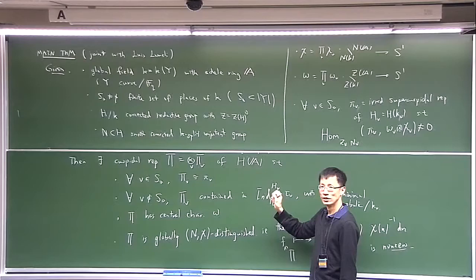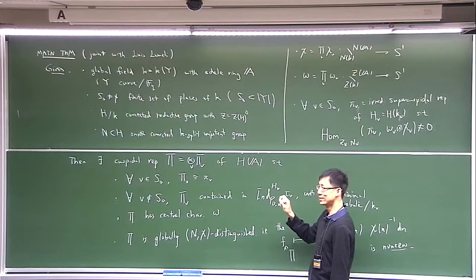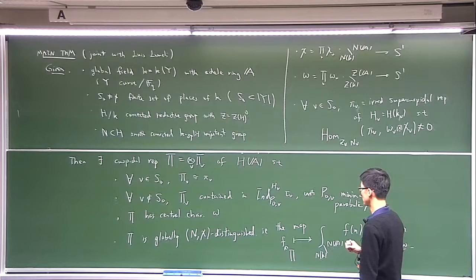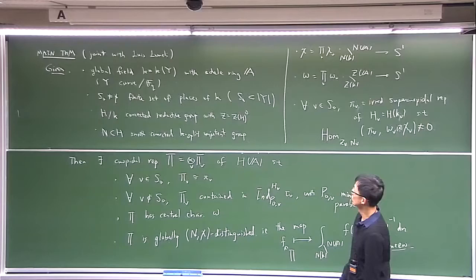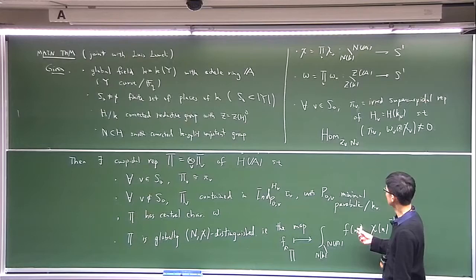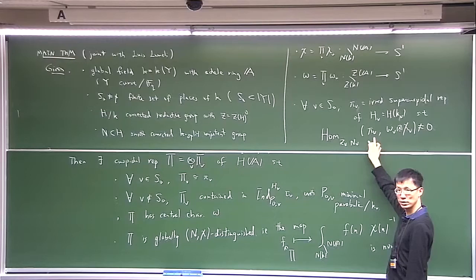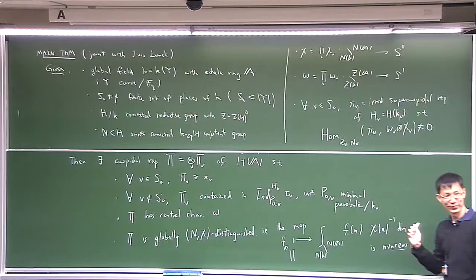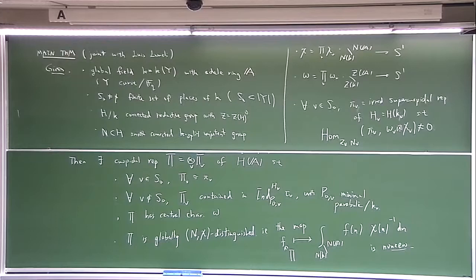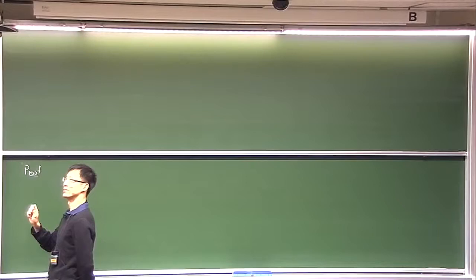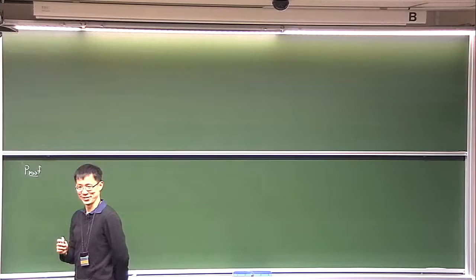In that case, I'm especially interested when the character chi is a so-called character in general position, or a generic character. In that case the condition is saying that the supercuspidal is a so-called generic supercuspidal, and this linear functional is the so-called Whittaker–Fourier coefficient. But before going to the proof, the proof basically relies on the following sort of baby observation.